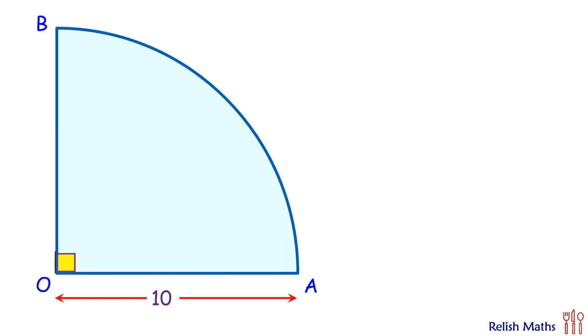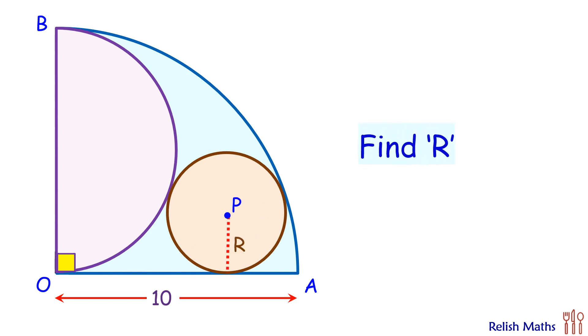In today's question, given is a quadrant with radius 10 centimeters. With OB as diameter, we are drawing a semicircle, and inside it we are drawing a circle which is touching the semicircle, quadrant, and the radius. Using this data, we have to find the radius of the circle. Let's check its interesting solution.